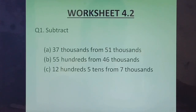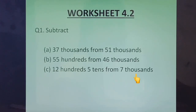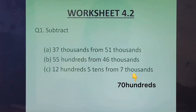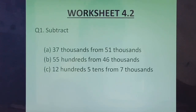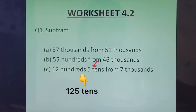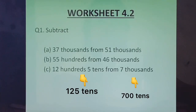Part C: 12 hundreds, 5 tens from 7 thousands. You will have to convert 7,000 to hundreds and then to tens, and 12 hundreds to tens. 7,000 will become 700 tens. 12 hundreds will become 120 tens, and 120 tens plus 5 tens gives 125 tens. That is a good enough clue — I am sure you can do it now.